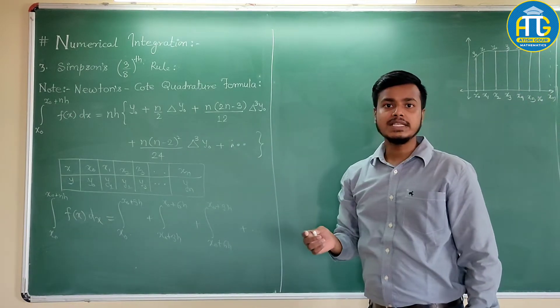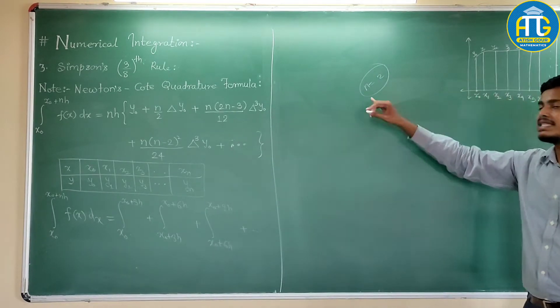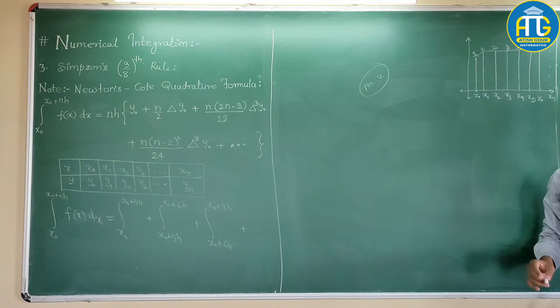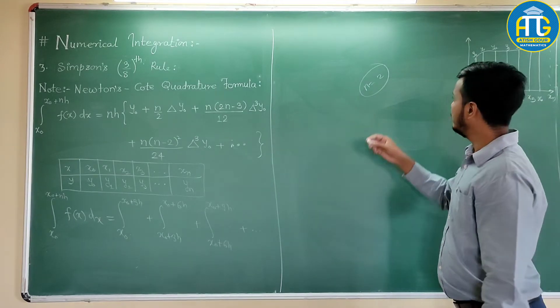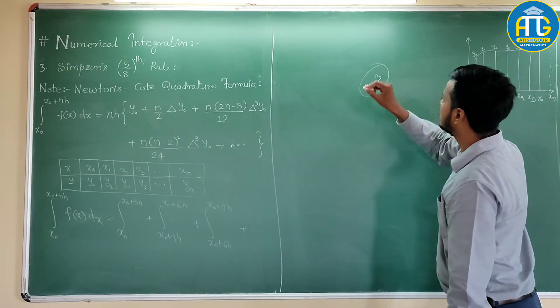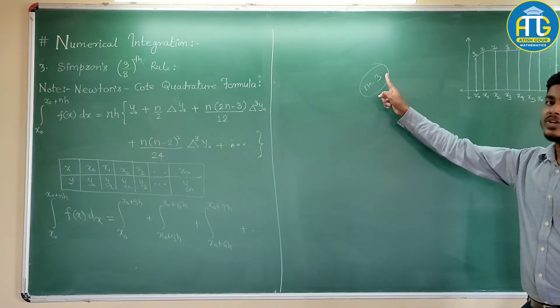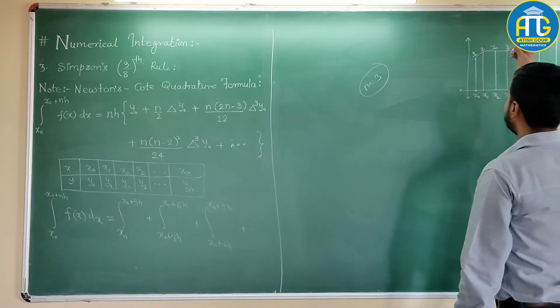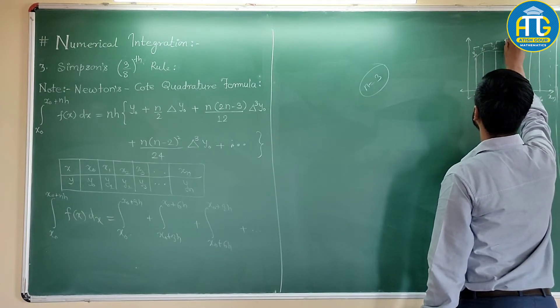If you remember in the Simpson's one-third rule, we have taken n is equal to 2. What is this n? This n is nothing but the number of intervals. Here in this Simpson's 3/8 rule, we will just take the number of intervals to be 3. So when you take the number of intervals to be 3, then what I need to consider? This is one interval, this is second, and this is third.